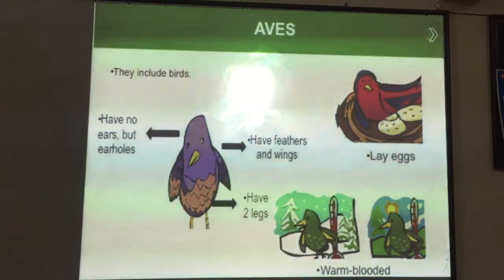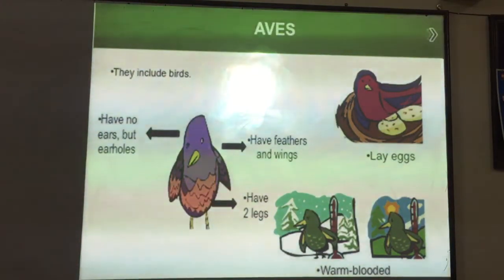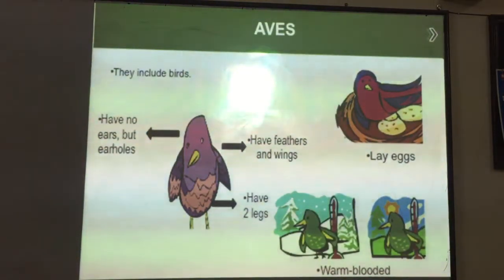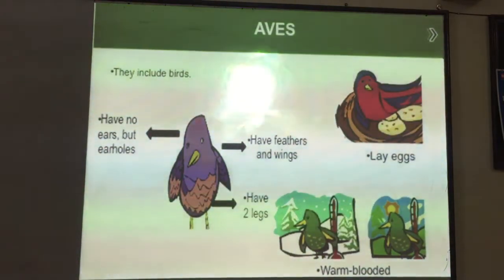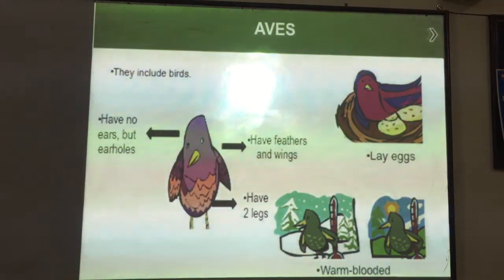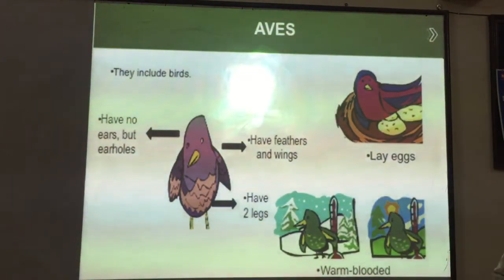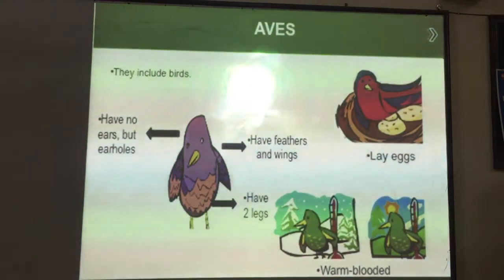Now we have aves. Aves are birds. They do not have external ears, but they have ear holes — internal ears are present while external and middle ears are absent. They have feathers and wings for flying and they have two legs. They are also oviparous, meaning they are egg-laying animals. These are warm-blooded, meaning they have a constant body temperature and can easily survive in extreme temperatures. And they have a backbone.